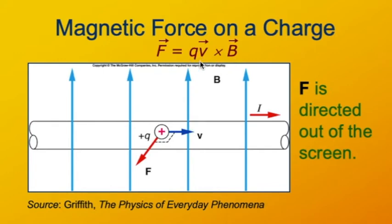Q times V is the charge times the velocity of the particle. In this case, since the charge is positive, the charge times the velocity is in the same direction as the velocity, which is to the right. B in this diagram is up. The cross product — remember how to do cross products using the right-hand rule.